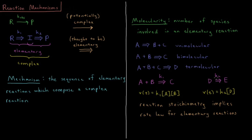If I have D going to E with a rate constant K2, that's V of T equals K2 times D. If I have D plus D going to E with K3, then V of T is K3 D squared.